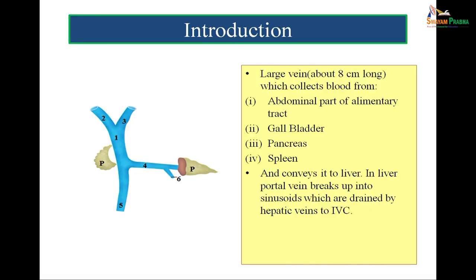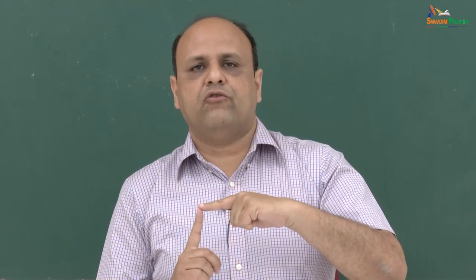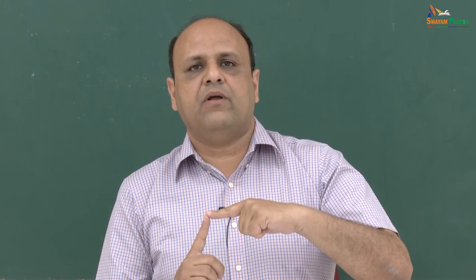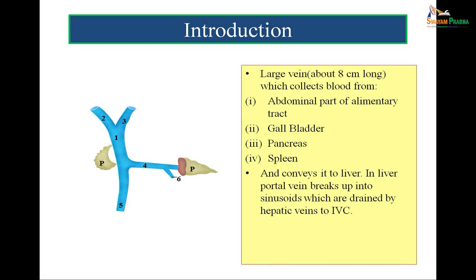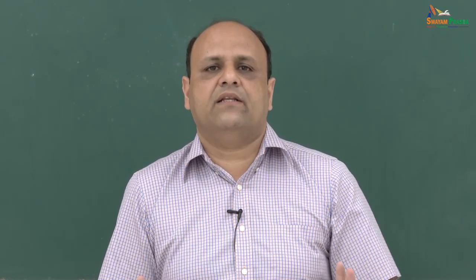The figure on the left is showing the formation of the portal vein. The splenic vein coming from the left side is joining the superior mesenteric vein to form the portal vein, and this portal vein is formed behind the neck of the pancreas. In the figure, P represents the pancreas, 5 represents the superior mesenteric vein, 4 represents the splenic vein, 6 is the inferior mesenteric vein entering the splenic vein, and 1 is the portal vein, 8 cm long, which divides into right and left branches.